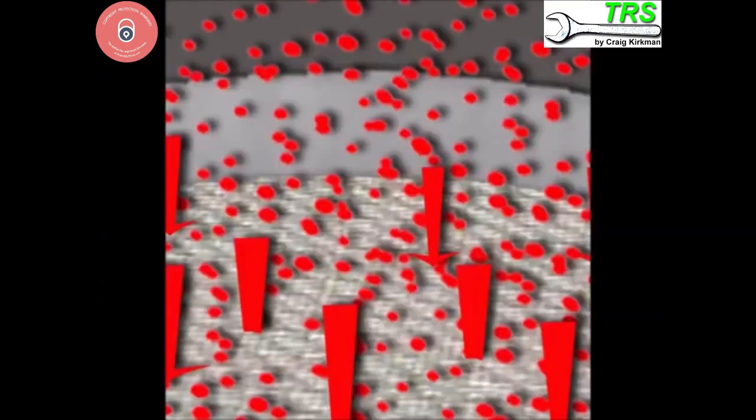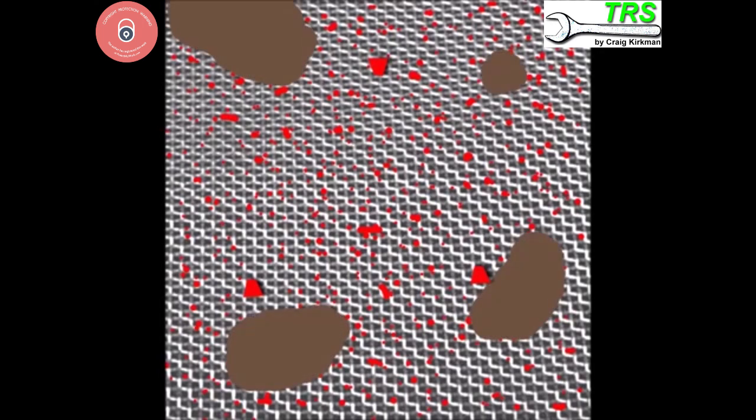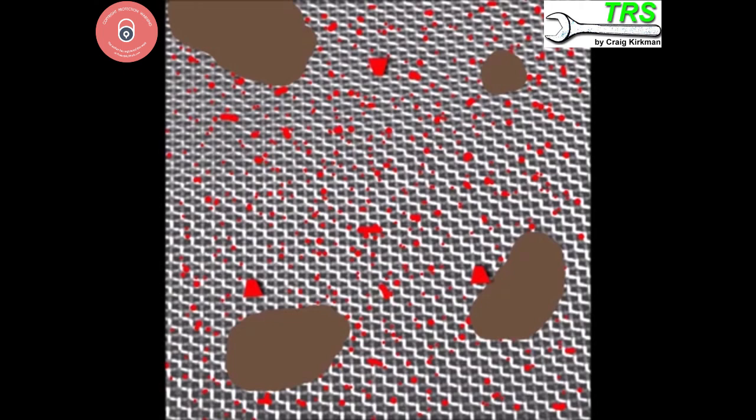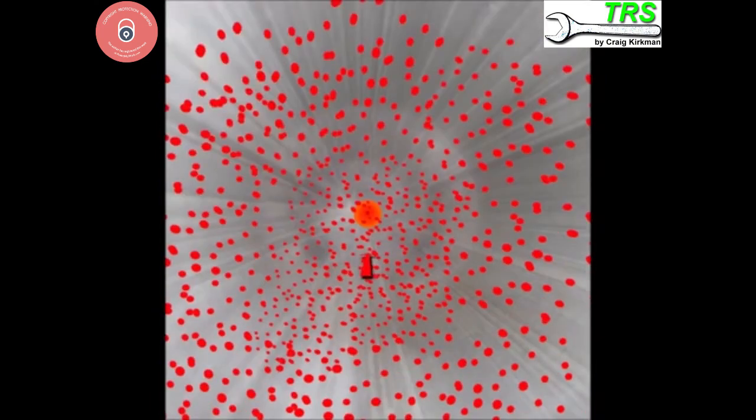This flat metal filter is the last filtration we go through as fuel molecules before we're used in the engine. Any dirt or crud that managed to pass the fuel filter in the fuel tank now gets trapped here on the surface of this filter. And the fuel goes through its final purification before it's used in the engine. Having passed through it we now flow down the long tube towards the needle valve.